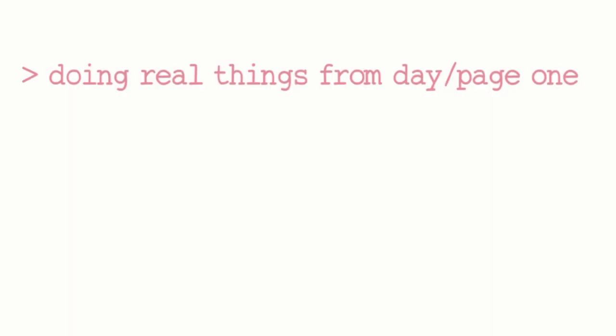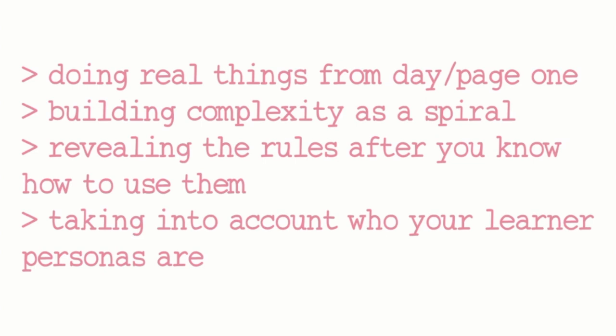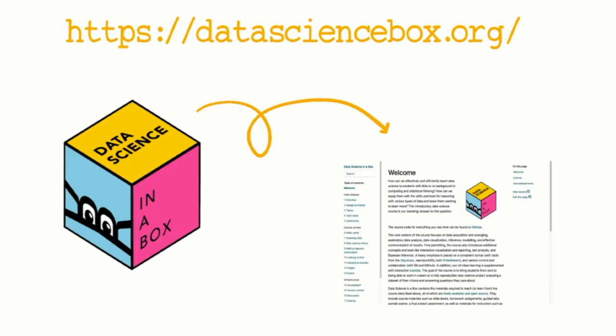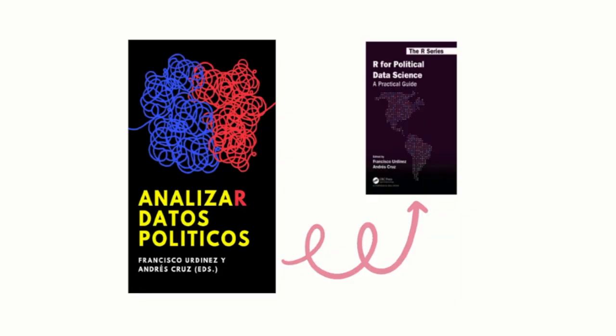So taking into account the communicative approach when teaching a programming language involves doing real things from day or page one, building complexity as a spiral, revealing rules after you know how and when to use them, and taking into account who your learner personas are. In the last couple of years, a lot of R resources have been created taking into account these principles — learning resources that let you experiment first and then build explanations, books that show you the whole game first and then explain the details, publications with different learner personas that show you how to do relevant things with relevant data for your field.